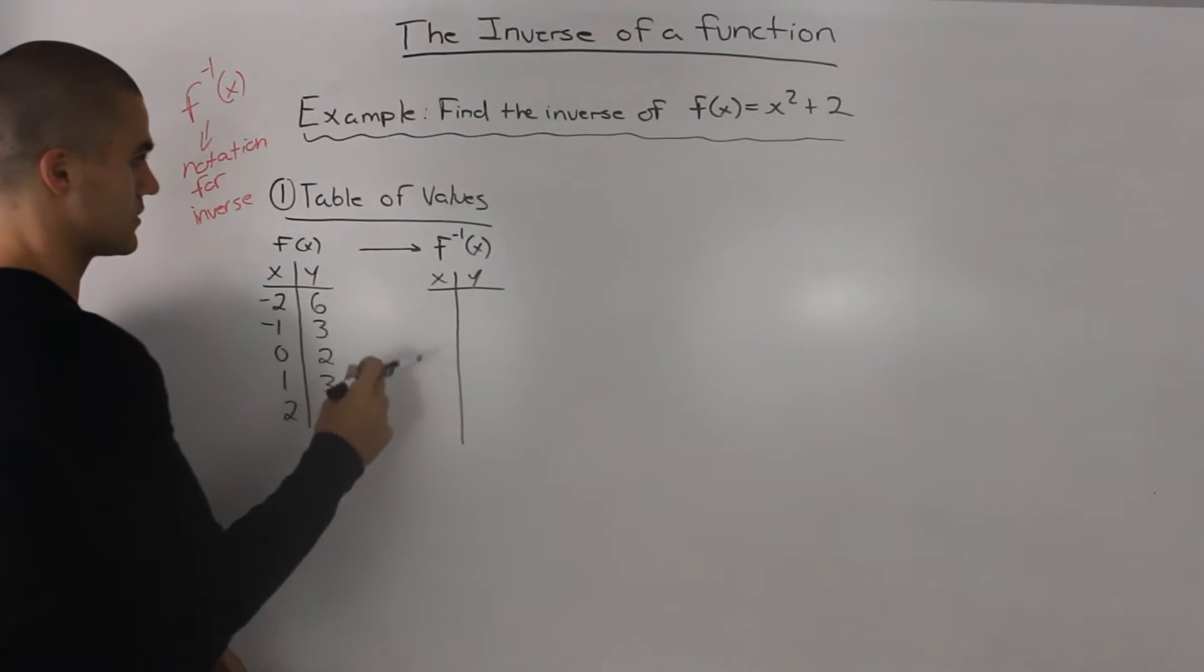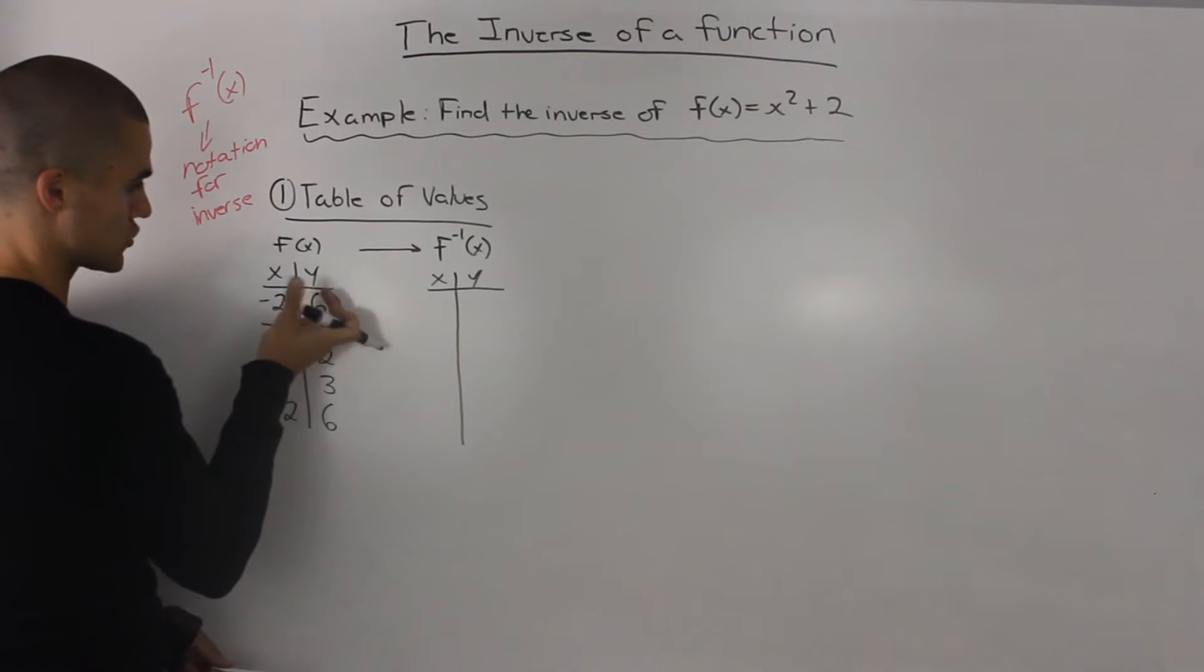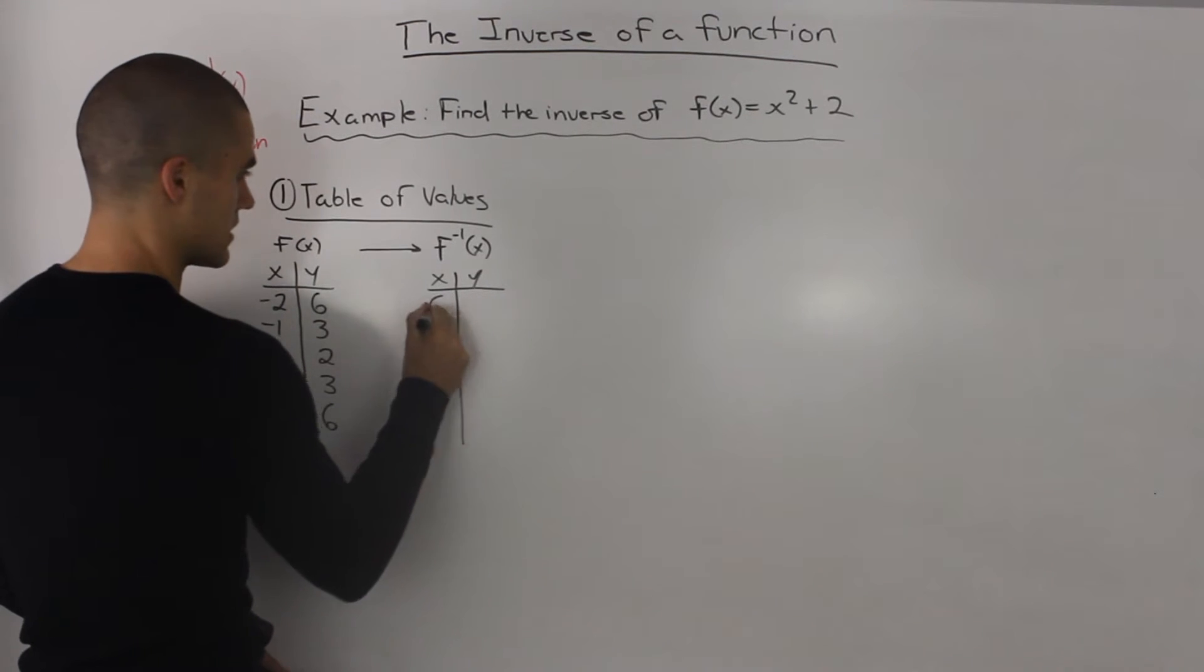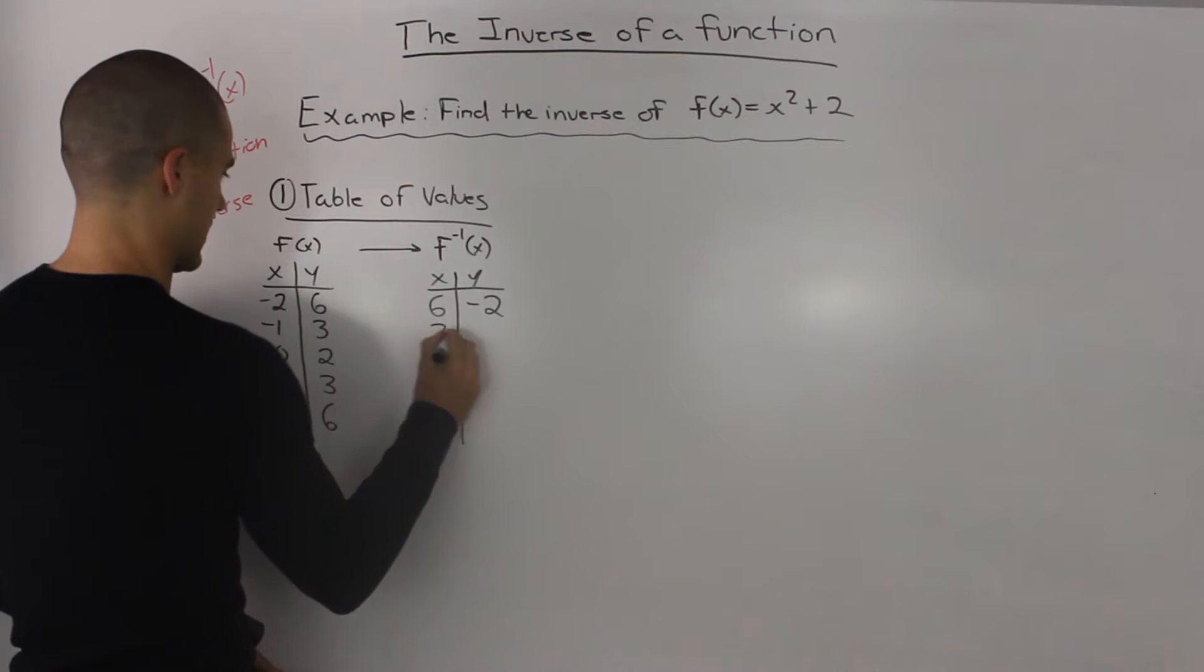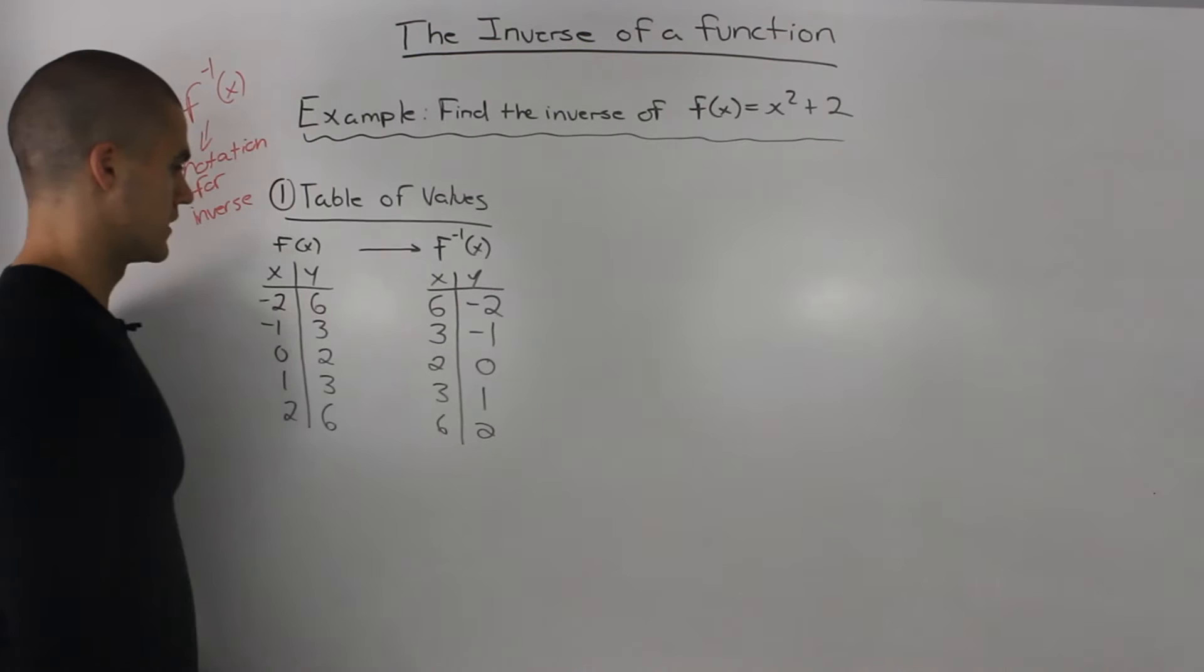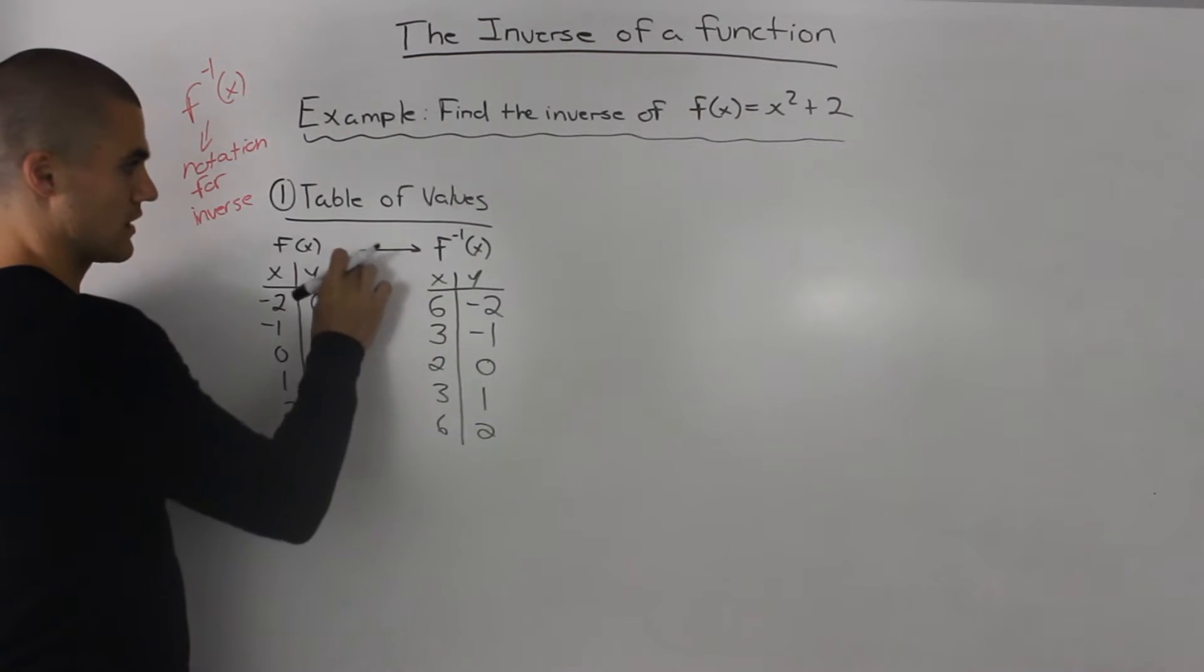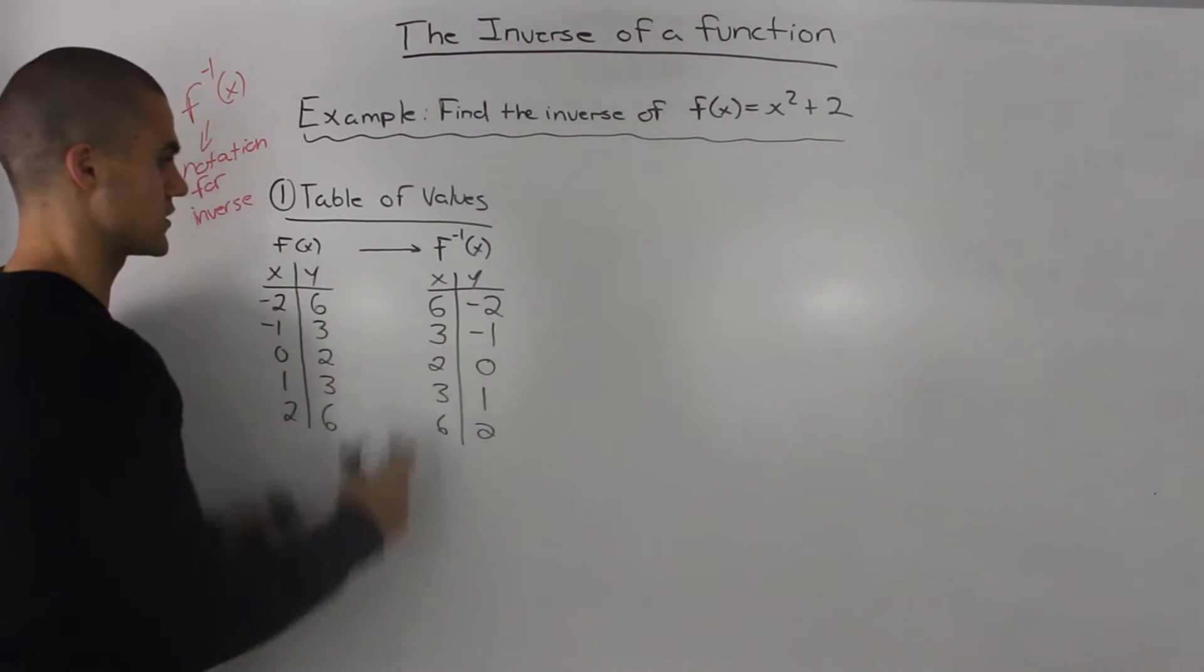So going back to the table of values, as we said, all we do with the inverse is we switch the corresponding x and y values. So the x value here would be 6 and the y value would be -2, and likewise for the other points. So we'd have 2 and 0, 3 and 1, 6 and 2. So again if we're given a function f(x) and we make a table of values for it, the table of values for the inverse would just be the x and y values switched.